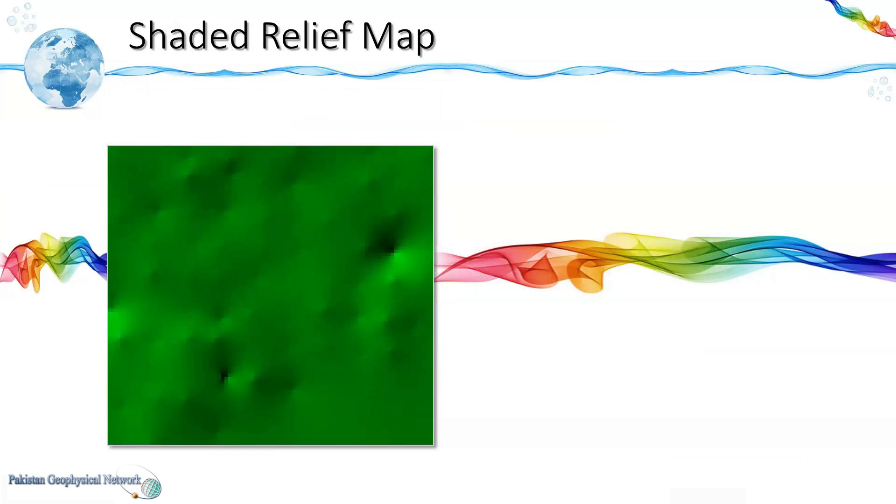Finally we have the shaded relief map of the same grid. Here the light source is placed at the upper left side and here we can see this is a depression which is indicated by this shadow and this highlighted part.